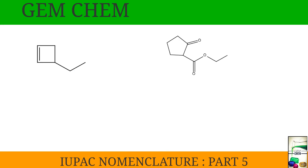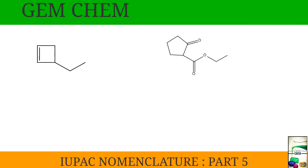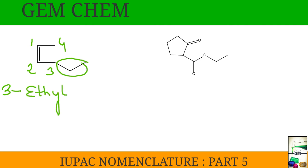Now see this one. We start numbering from the double bond. The substituent is an ethyl group, so it will be a prefix. We write it as 3-ethylcyclobutene — since it has a double bond, we write butene rather than butane.